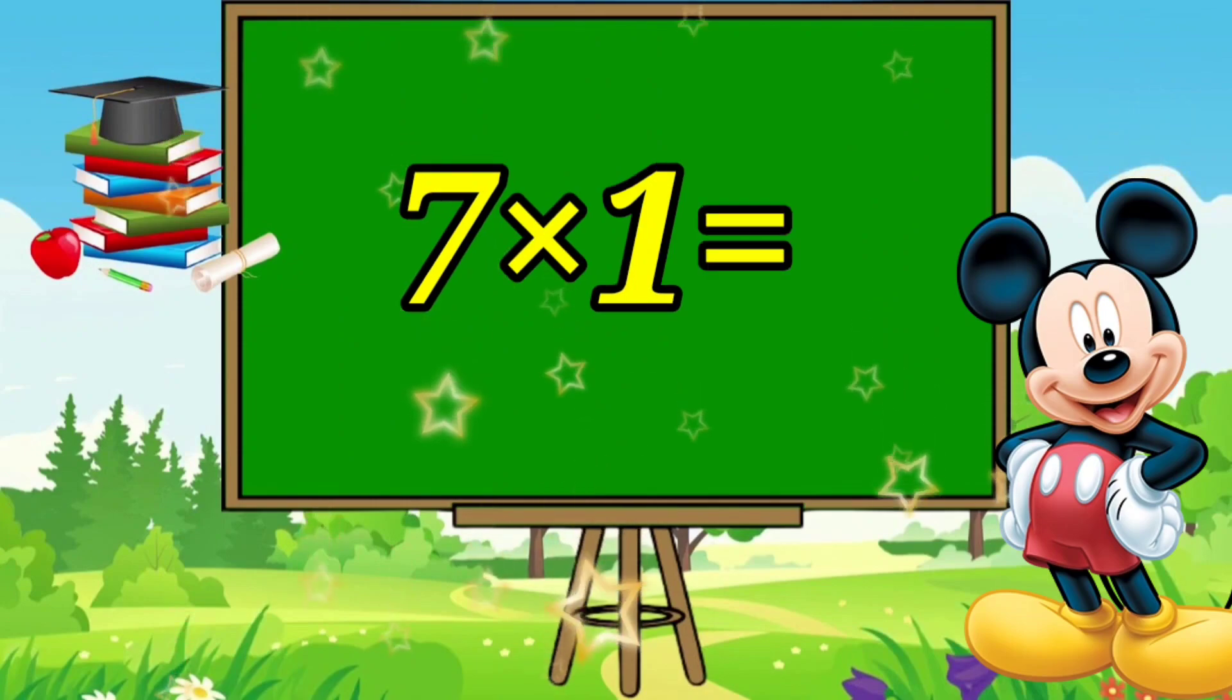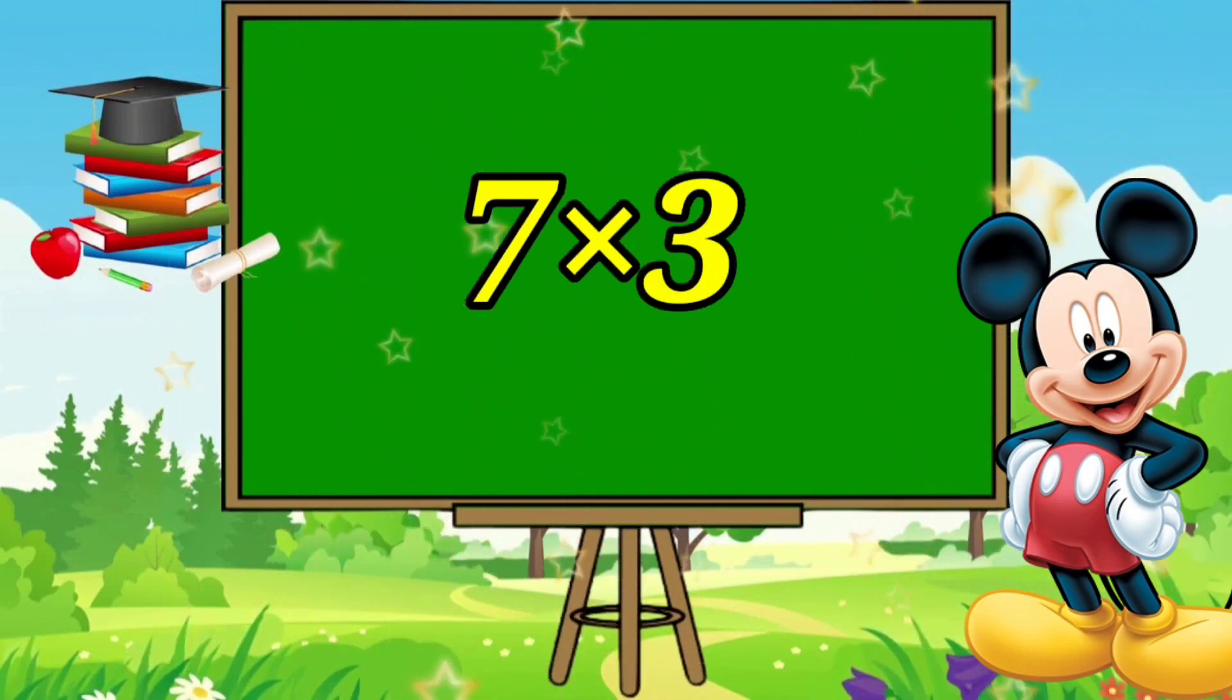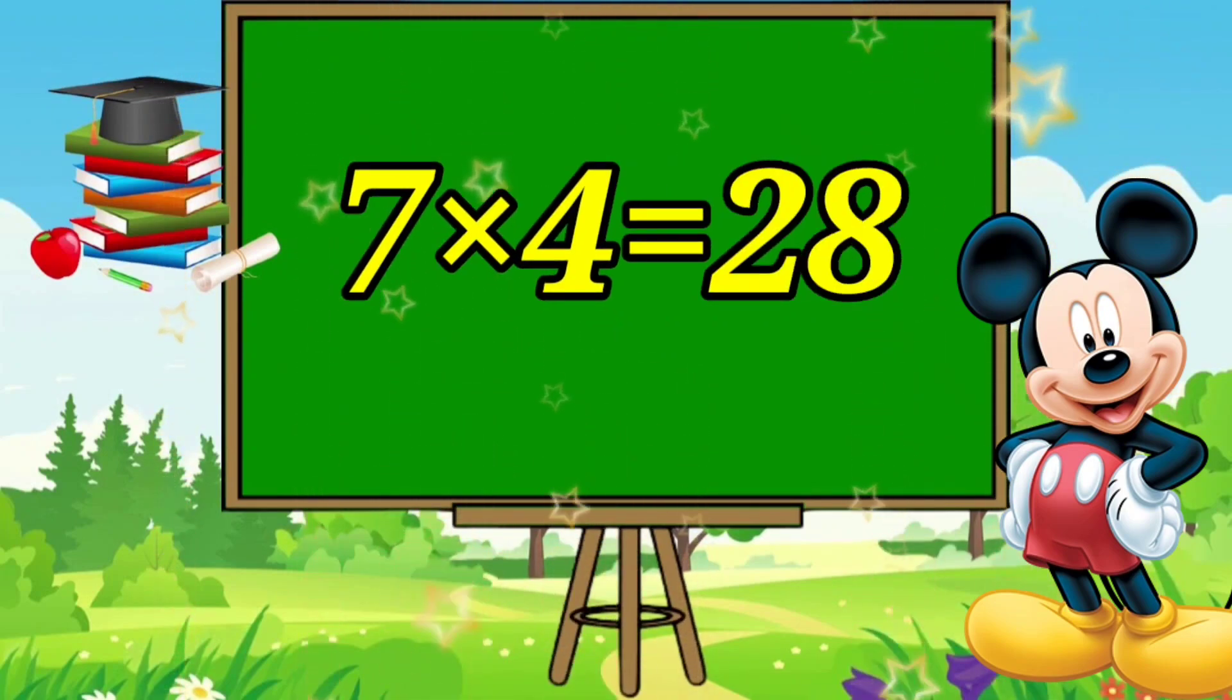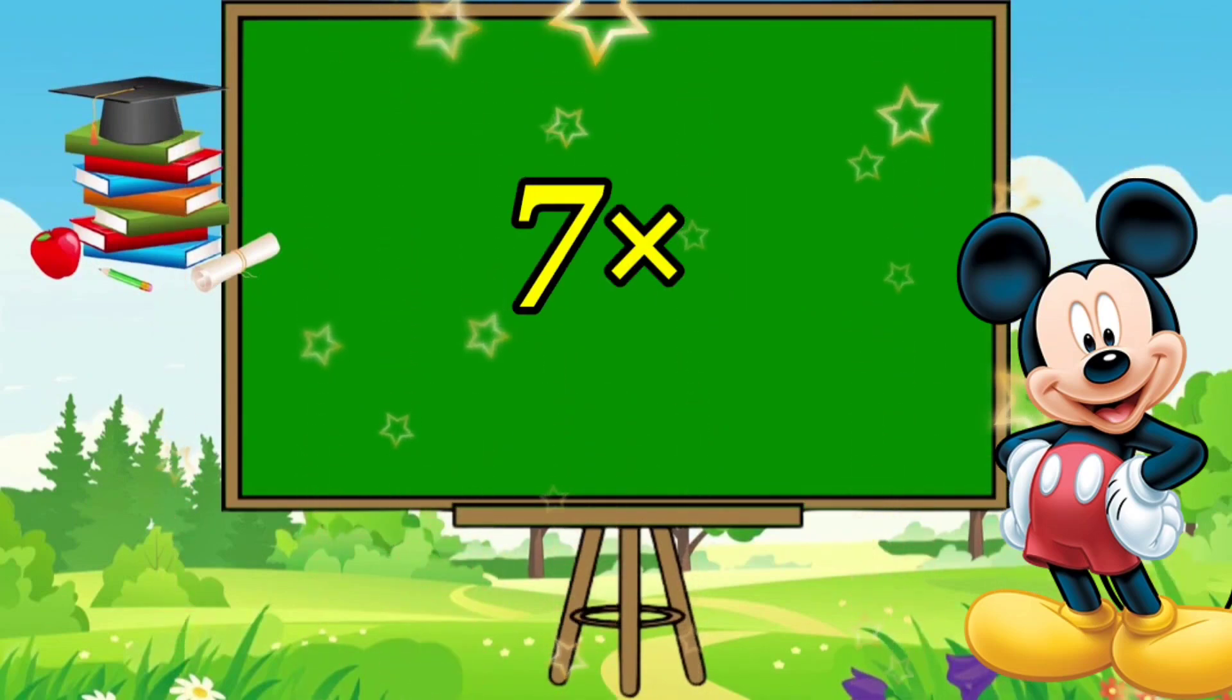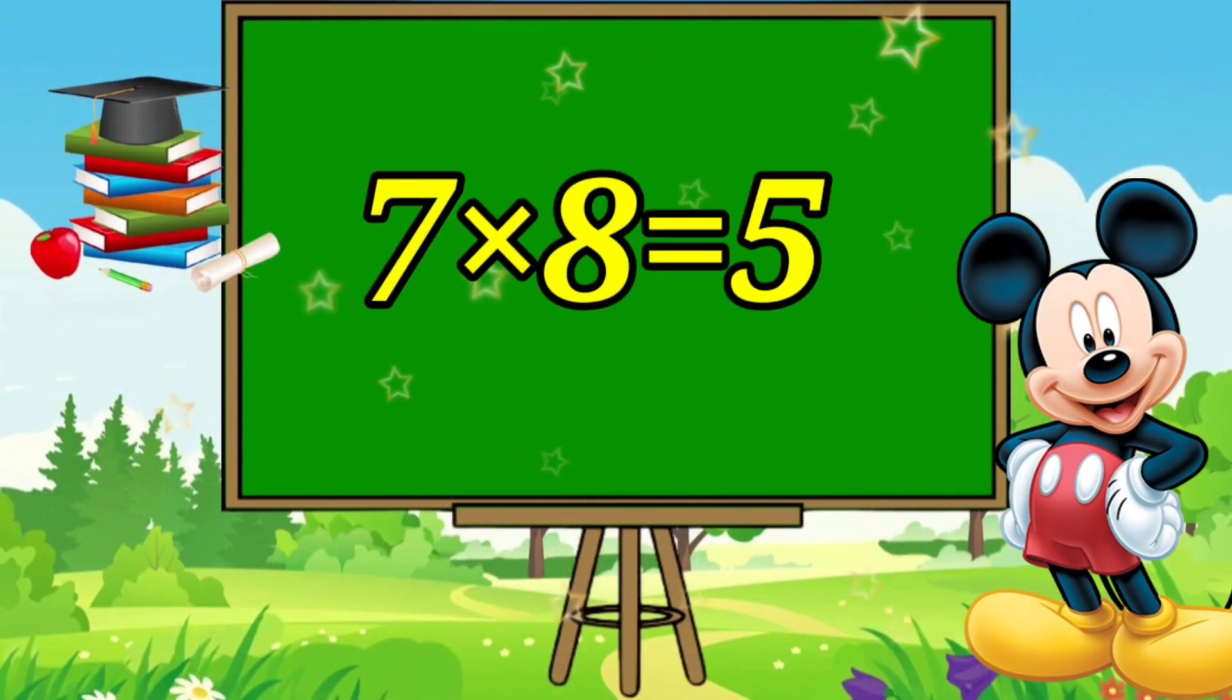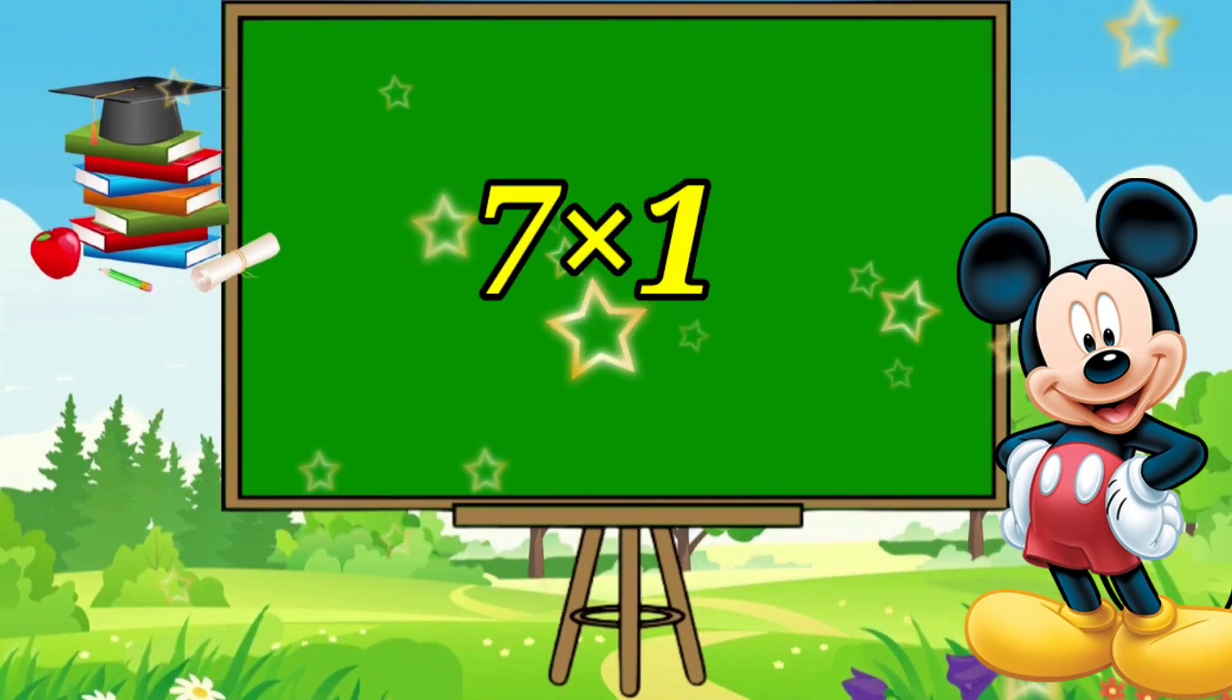7×1=7, 7×2=14, 7×3=21, 7×4=28, 7×5=35, 7×6=42, 7×7=49, 7×8=56, 7×9=63, 7×10=70